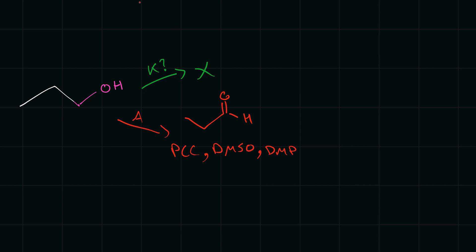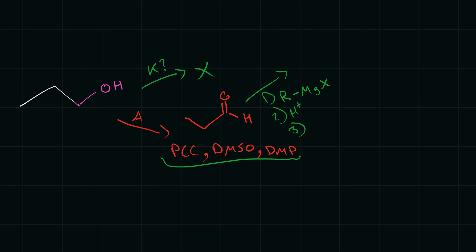Now if we really wanted a ketone, what we could do is react this aldehyde — step one: a Grignard reagent, where R represents any alkyl group, magnesium, and X represents a halide. Then we add an acid to remove the magnesium from the oxygen ion. Then we can re-oxidize it using either mild reagents or HgSO4 and H2SO4. That combination creates a ketone, where R is the R group added from the Grignard reagent. Notice that you are adding extra carbon groups to it in order to perform this.